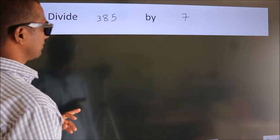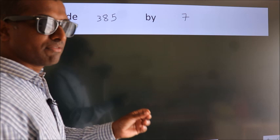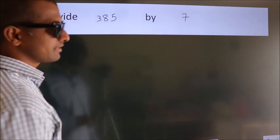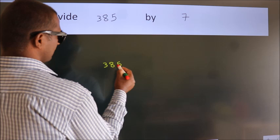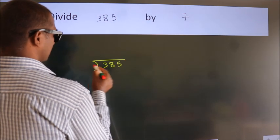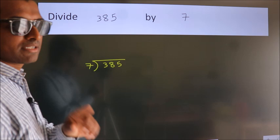Divide 385 by 7. To do this division, we should frame it in this way. 385 here, 7 here. This is your step 1.